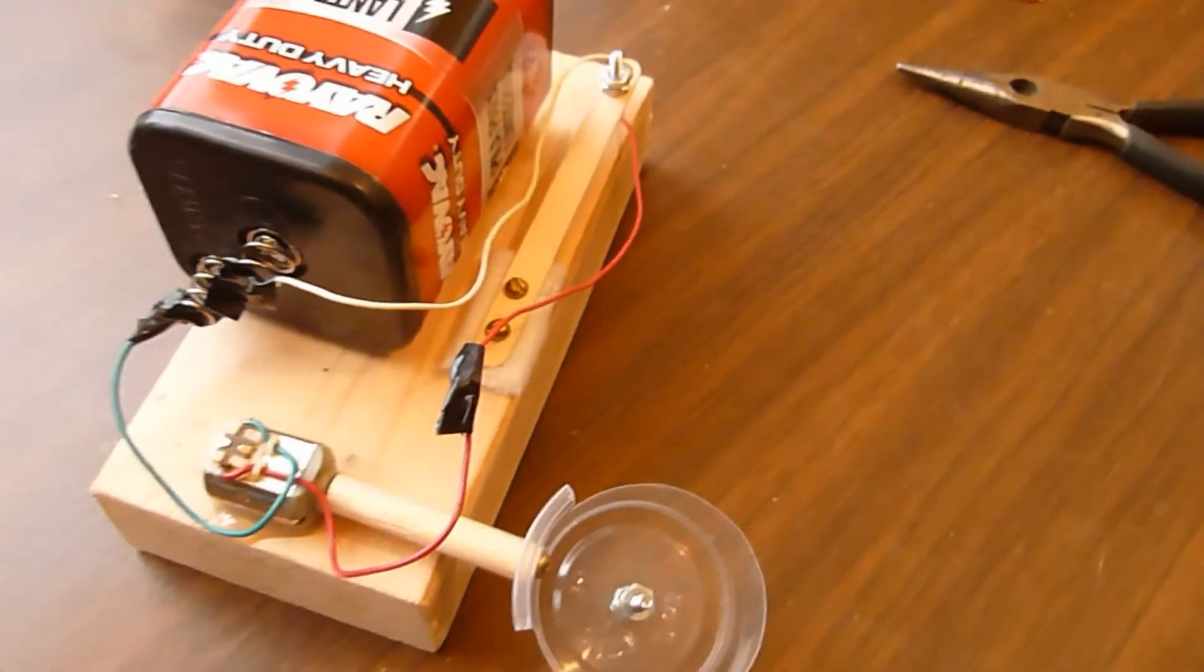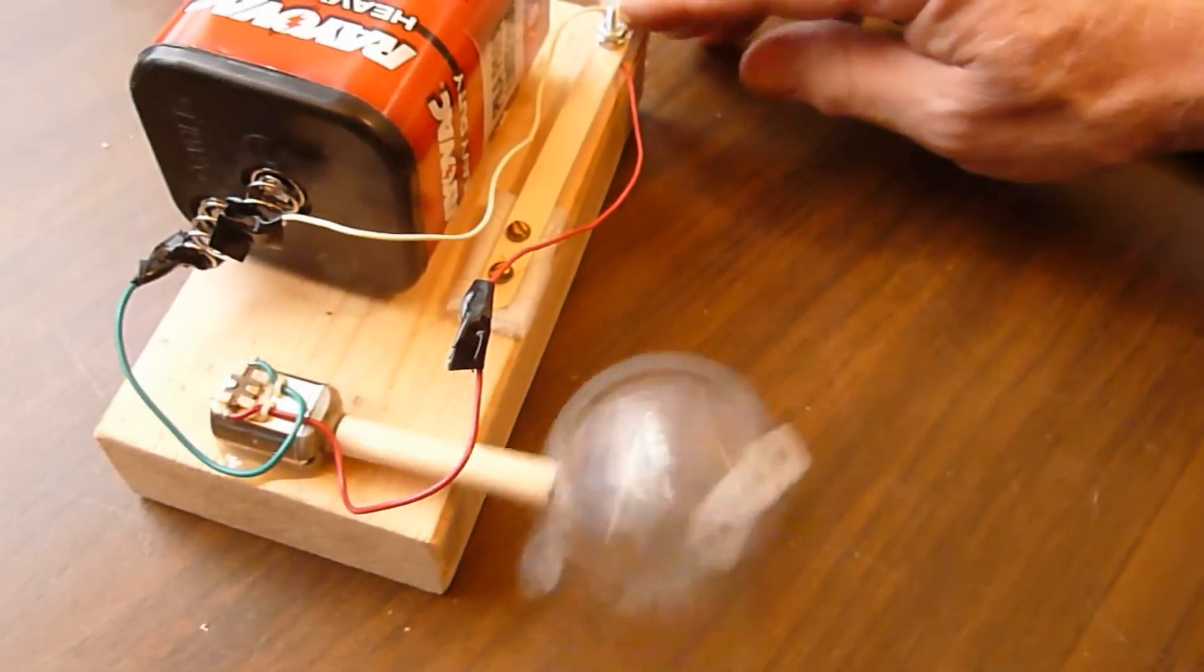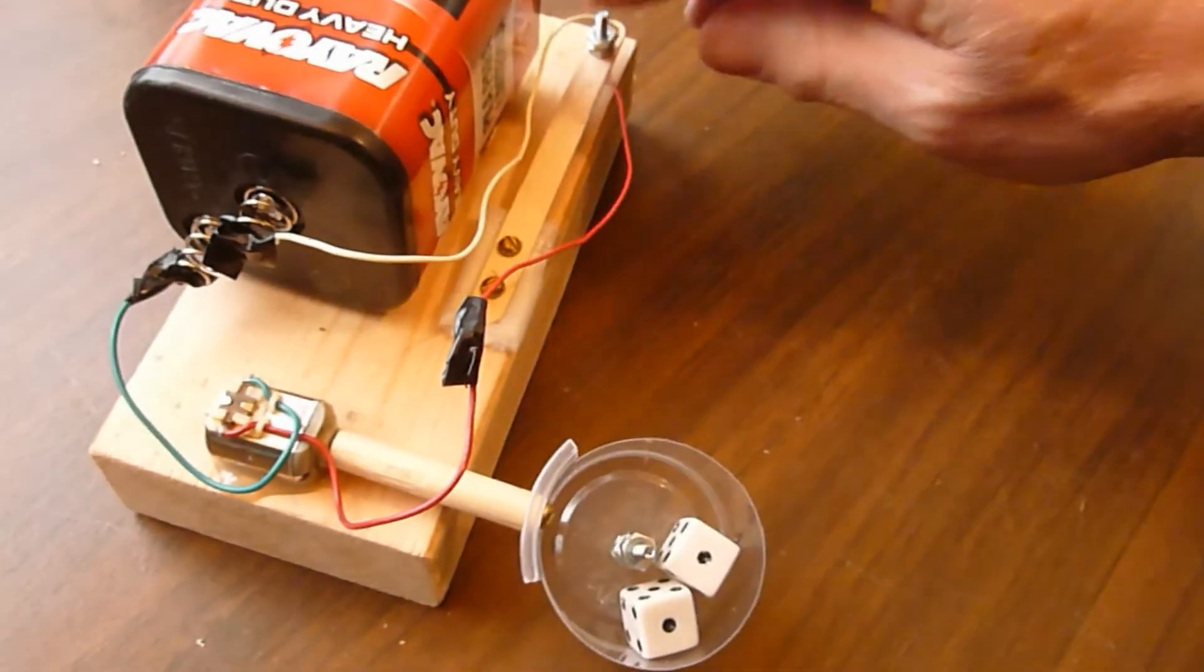Using the robotic dice tosser is simple. Put the dice in a cup and when you want to toss them, simply press down the switch. This project makes playing board games even more fun.